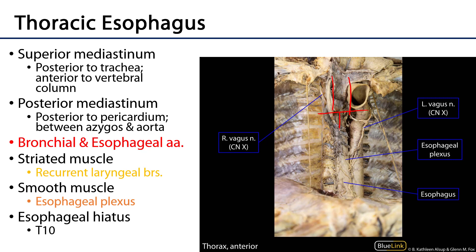We're now at the level of the posterior mediastinum, and we'll see that the esophagus has a very close relationship with the posterior aspect of the pericardium and therefore the heart. It will be an intermediate between the azygos vein and the thoracic part of the descending aorta.